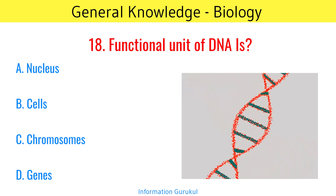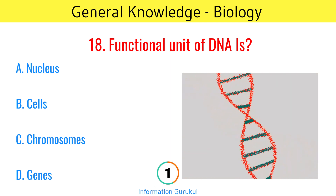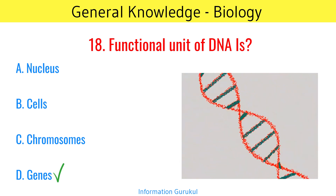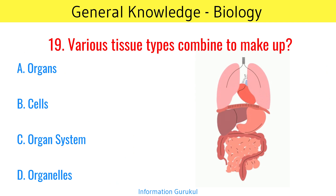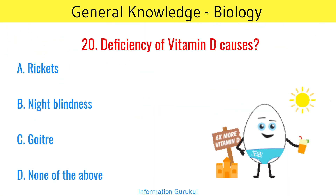The functional unit of DNA is genes. Various tissue types combine to make up organs. Deficiency of vitamin D causes rickets.